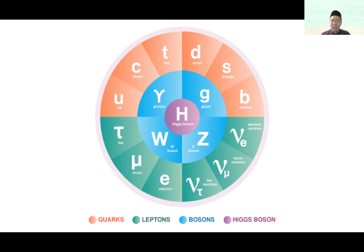There are other particles called fermions. Fermions are particles that consist of other particles, and those other particles scientists call quarks. You have the orange part — these quarks. There are actually six quarks made up of three pairs: up and down quarks is one pair, top and strange quarks is another pair, and charm and bottom quarks is another pair.